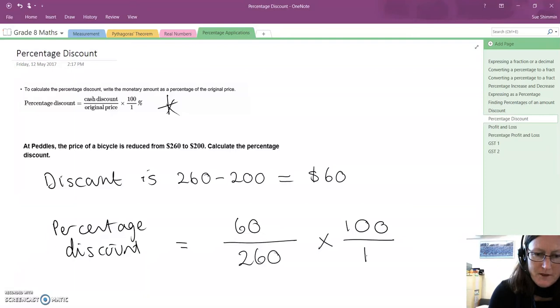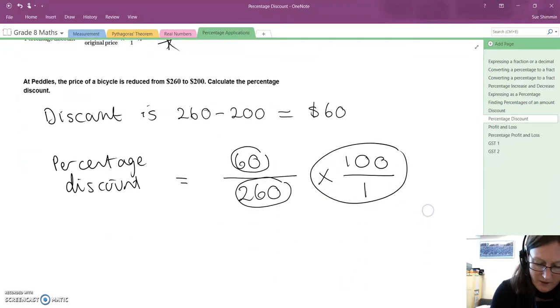So for percentage discount, the amount of discount over the original price times by 100 over 1. If we put that into our calculator, it works out at approximately 23%.